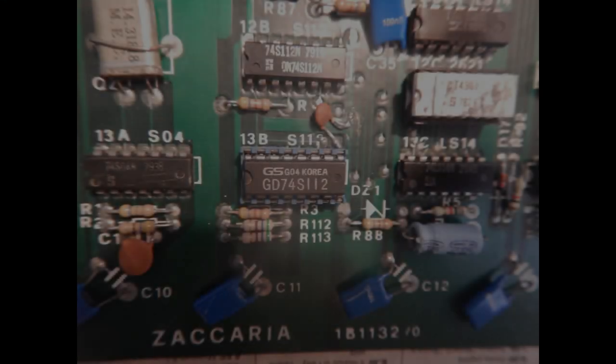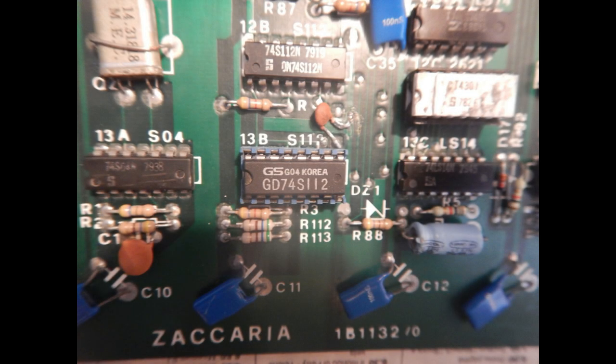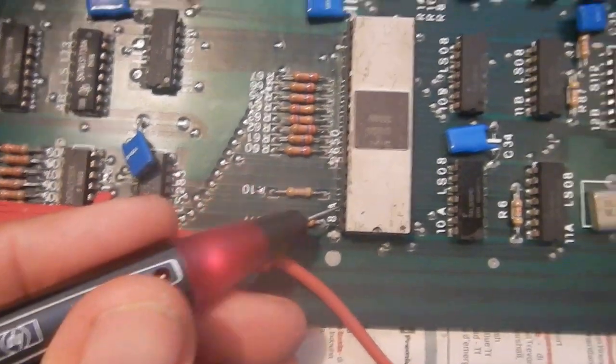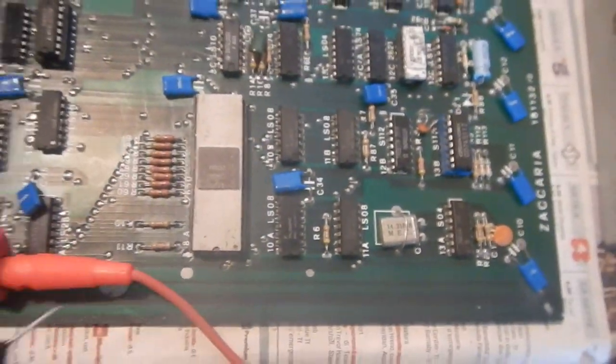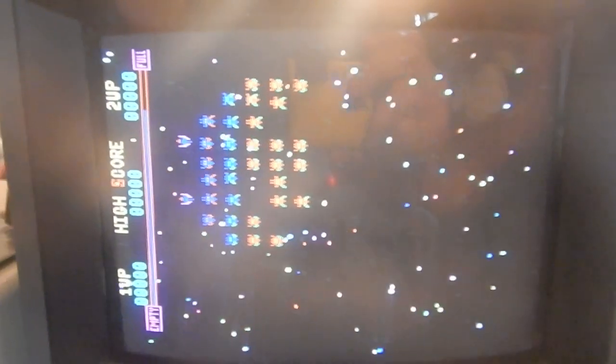So I have removed the old 74S112 and replaced it with a spare one. Now the CPU clock is present and the game goes into the attract mode, but I can spot a few issues.